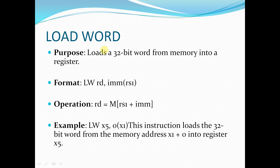Next is the Load Word instruction. This instruction loads a 32-bit word from memory into a register. The format is: LW RD, immediate(RS1). For example, LW x5, 0(x1) loads the 32-bit word from the memory address x1 + 0 into register x5. So it loads 32-bit data from memory into the register using the provided address.